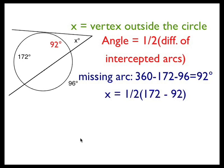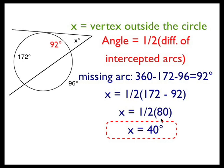Now I can go and set up an equation. The angle X is equal to half the difference of the two intercepted arcs, 172 minus 92. That's a subtotal of 80 and half of 80 is 40 degrees.